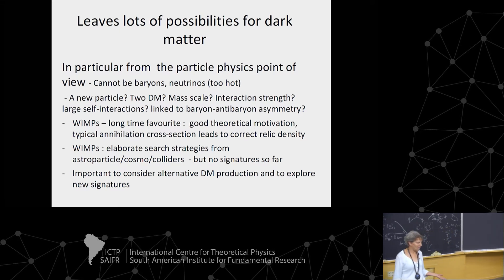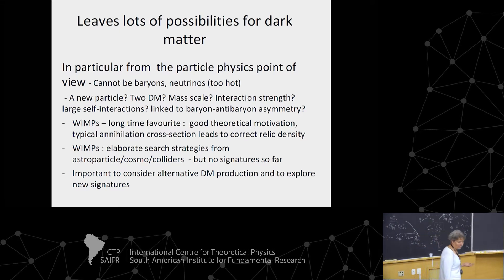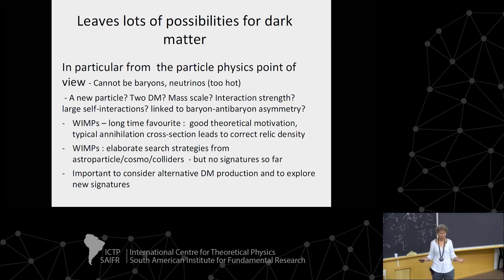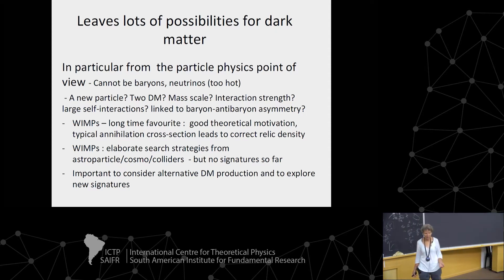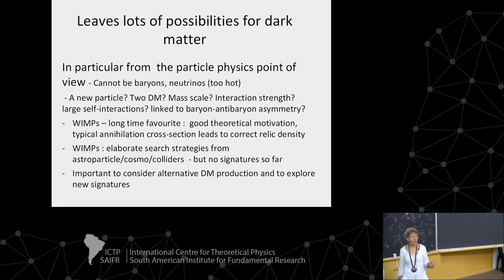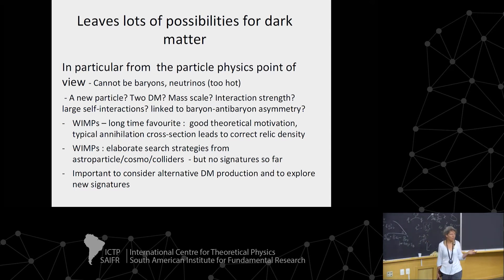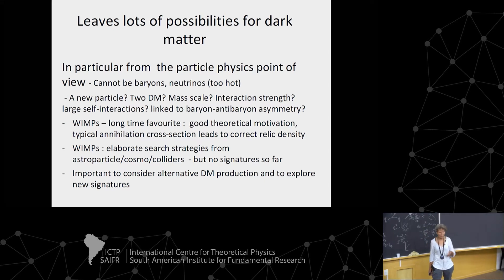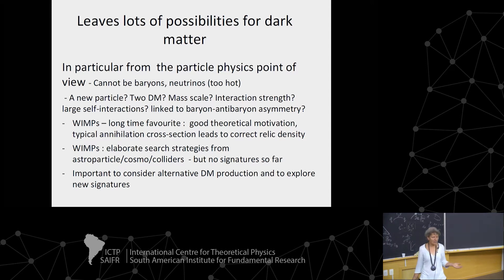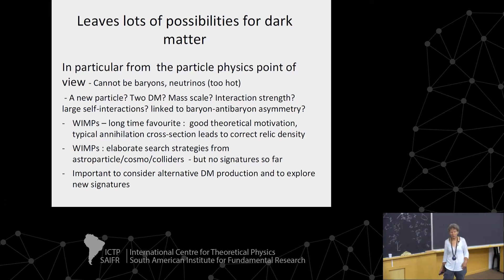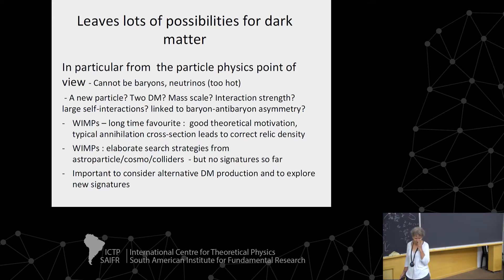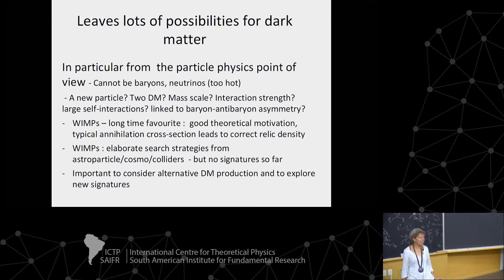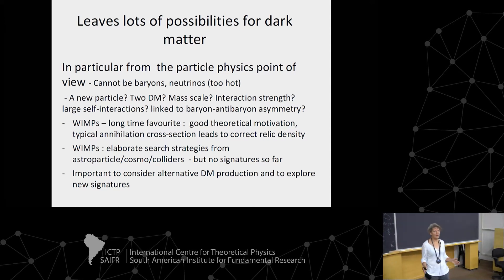For a very long time, the favorite framework for discussing dark matter was WIMPs — not only because it worked and there was the so-called WIMP miracle, but also because there was very good theoretical motivation from the particle physics point of view, particularly from supersymmetry. Hence, elaborate search strategies were devised for WIMPs in astroparticle physics, cosmology, and at colliders. But we have no signatures, so it is very important not to stay focused on WIMPs, but to explore other possibilities.